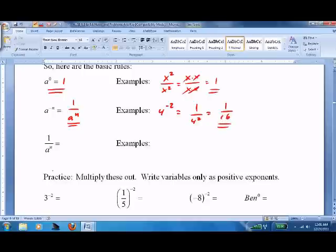1 over a to the n, if I wanted to flip it up, and we generally write exponents as positive numbers, would be the same as a to the negative n. So let's just say we had 1 over 1 half to the negative 2. Well, that would be the same as saying 1 half squared, which is 1 fourth.